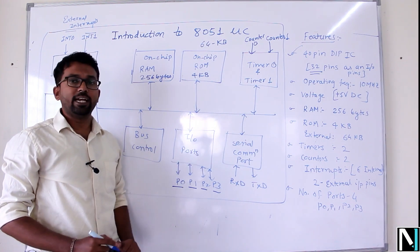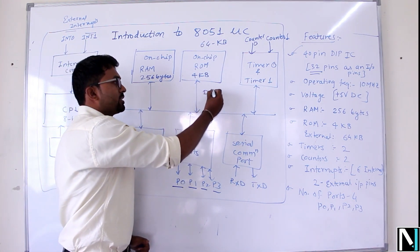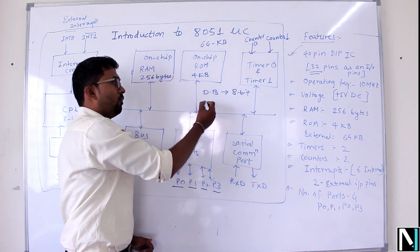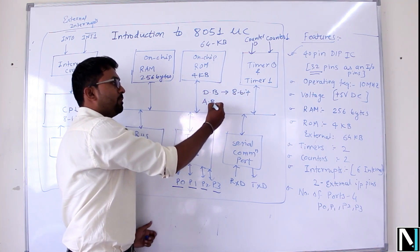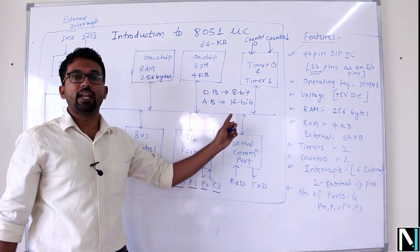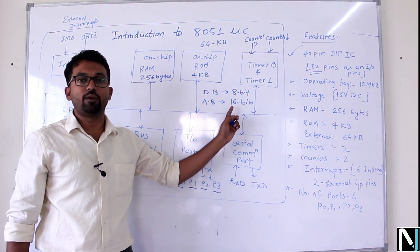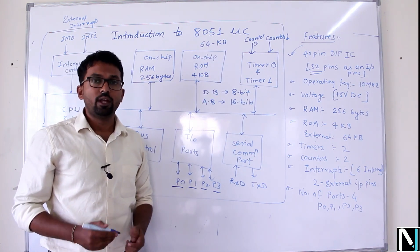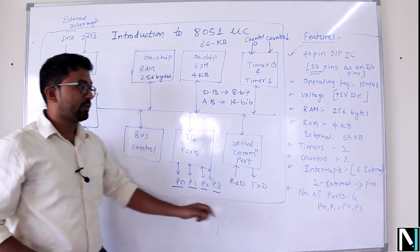If you look at the address bus and data bus, the size of data bus is 8 bits in case of 8051 microcontroller, while the size of address bus is 16 bits. That means maximum it can address 2 raised to 16 number of locations, that is 64K locations.